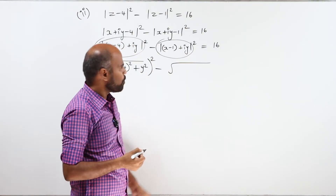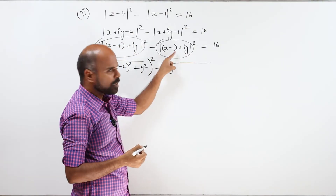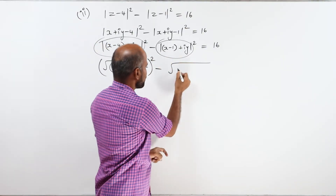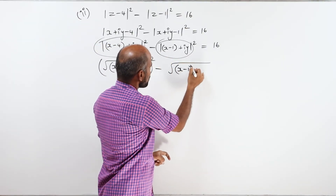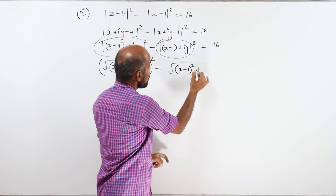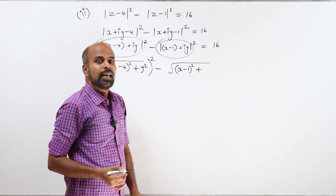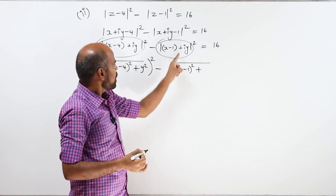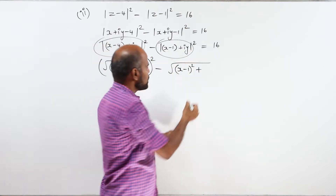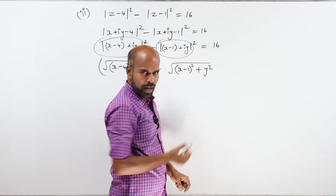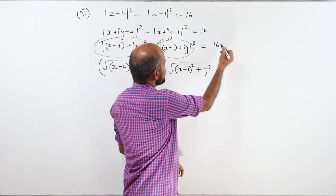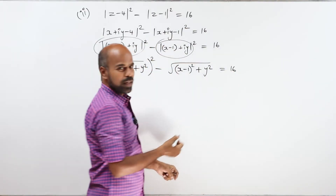For the second modulus: root over real part x minus 1, whole squared, plus imaginary part — the coefficient of i is y — squared. This equals 16.